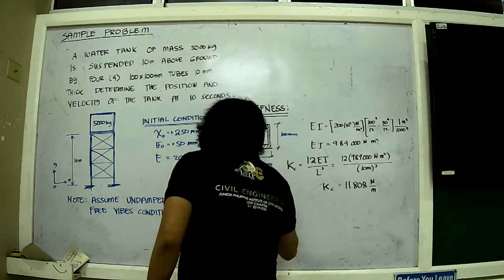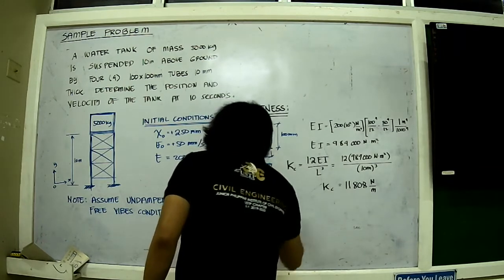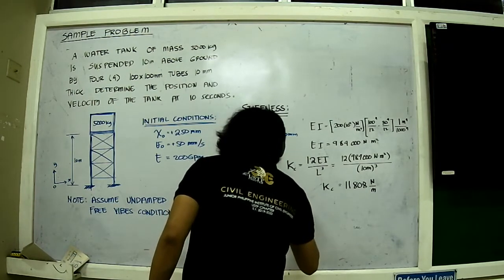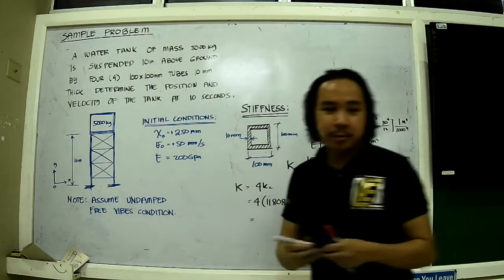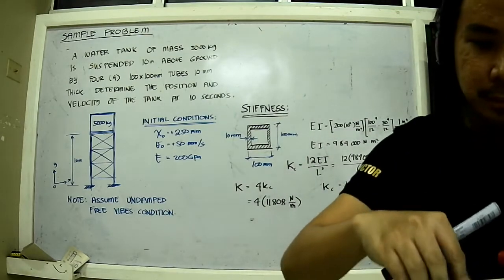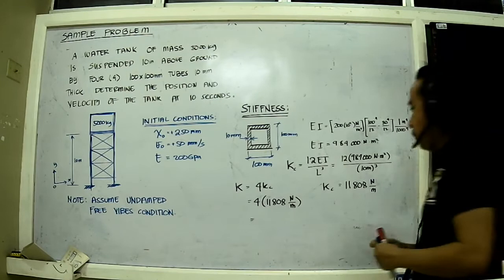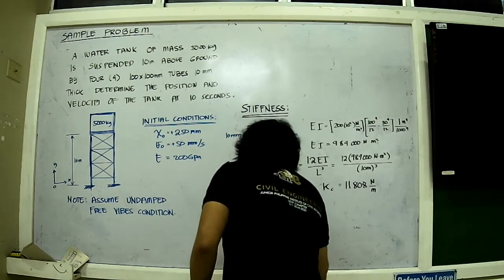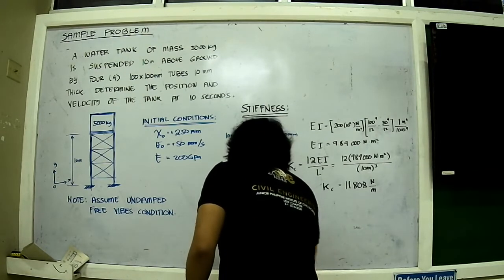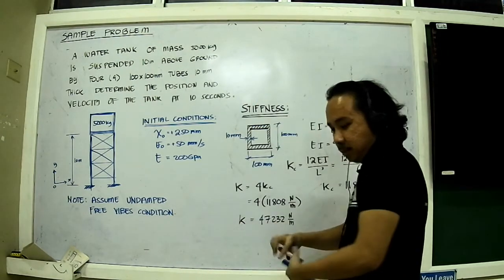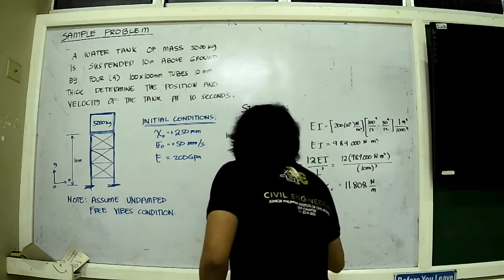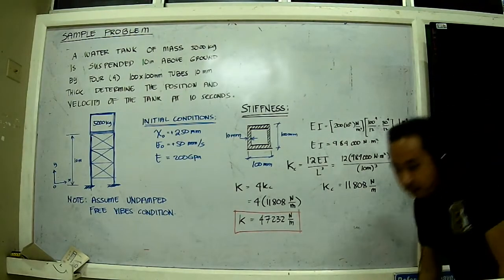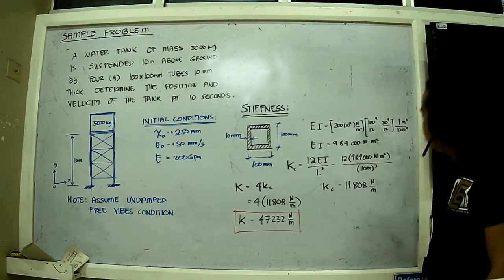We have K, but take note that this is for one column and we have 4 columns. We just need to multiply this by 4 to get the total K. So K is actually equal to 4 times KC, 4 times 11,808, and that should be equal to 47,232 Newton per meter. This is our K.